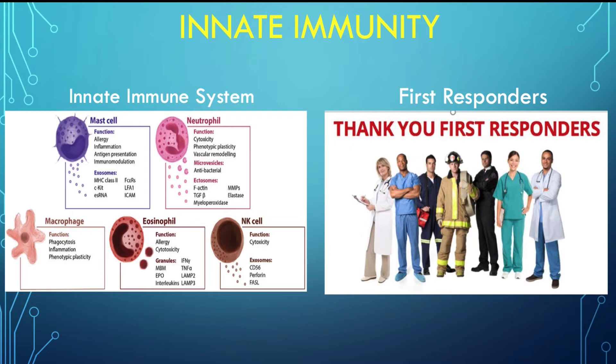Recently, scientists have found that children and young adults have a very strong innate immune system that seems to destroy foreign invaders prior to their ability to infect responsive cells. This finding may be one of the reasons these individuals seem to be resistant to COVID-19 infections. On the other hand, it is known that the immune system of older humans deteriorates as they age, and both the innate and adaptive immune systems are affected.